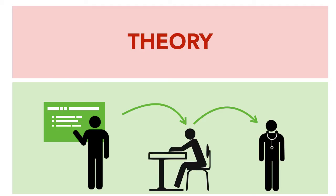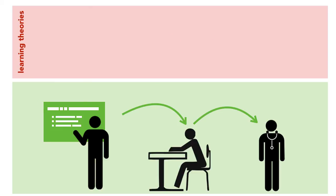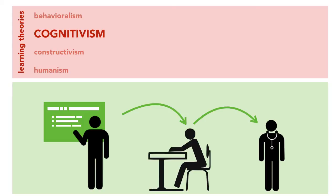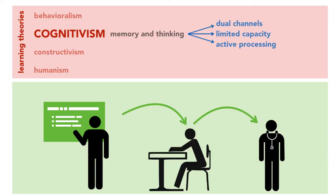Now let's look at some theory. Our goal here really is to create instructional material that gets into the long-term memory of our learners and eventually is available for later use or performance in the real world. Of the four learning theories that exist, I think these fall best into the one of cognitivism. Cognitive scientists focus on human information processing — namely memory and thinking — to design their instructional materials. And there are three main concepts that we're going to focus on.